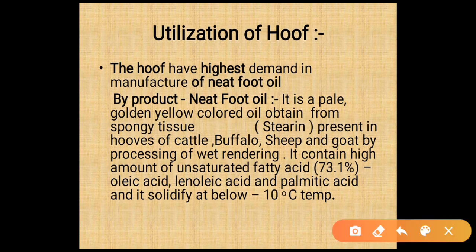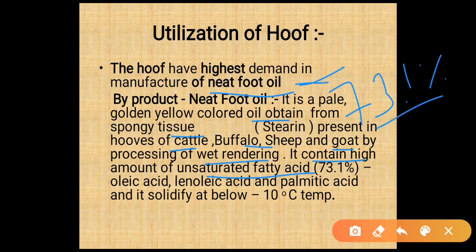Utilization of the hoof: hoof has the highest demand in the manufacture of neat foot oil, which is used in aeroplanes. Neat foot oil is a pale golden yellow colored oil obtained from the spongy tissue present in the hooves of cattle, buffalo, sheep, and goat. It contains a high amount of unsaturated fatty acids — about 73.71% — including oleic acid, linoleic acid, and palmitic acid. It solidifies at minus 10 degrees Celsius.